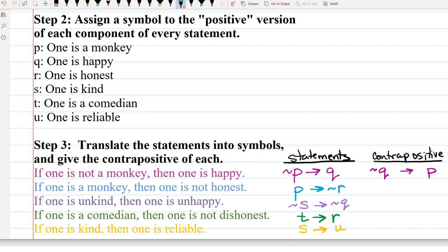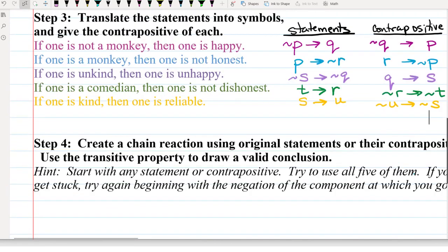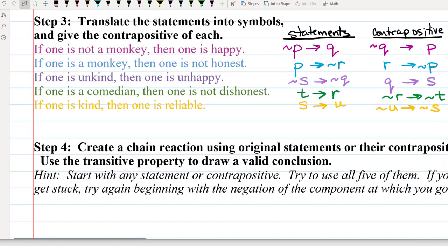So I'm going to write the contrapositive of each of these statements, reversing both the order and the sign. So now when we're trying to come to a conclusion in step four, I can always use either the original statement or its contrapositive, whichever I prefer, because they have the same meaning. So let's look at step four, how we're going to use these. We're going to create a chain reaction using either the original statements or their contrapositives, and then use the transitive property to draw a valid conclusion, which is what we're going to do in the next video.